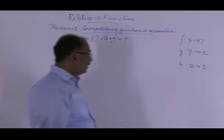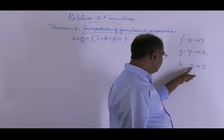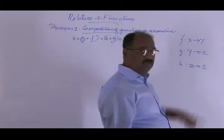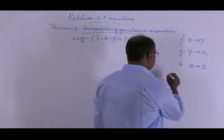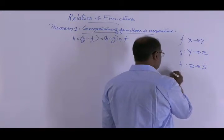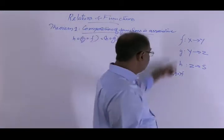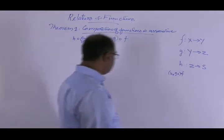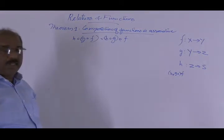And now for this: f from X into Y, g from Y into Z, and h from Z into S. Temporarily, h∘(g∘f) will be from X into S, and (h∘g)∘f will also be from X into S. And these two are equal — that is, the associative property.